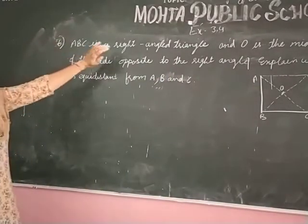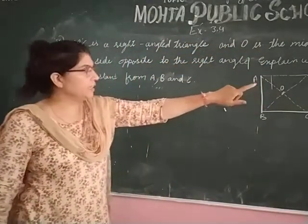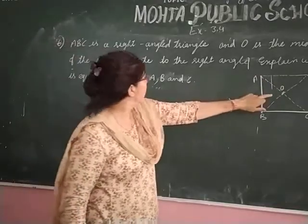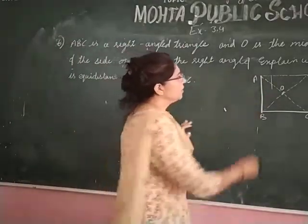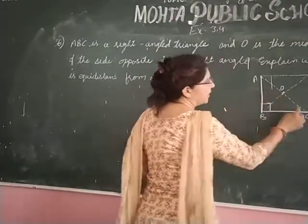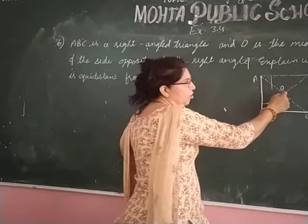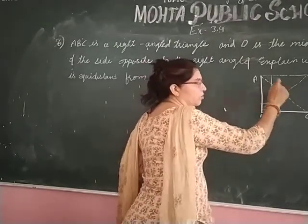ABC is a right angle triangle and O is the midpoint. Listen carefully. O is the midpoint of the side opposite to right angle. This is right angle. Opposite to right angle, the side is AC. O is the midpoint. It means AO is equal to OC.